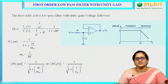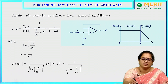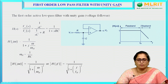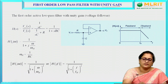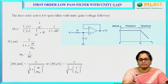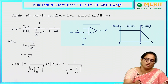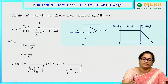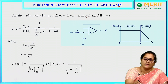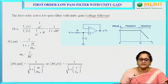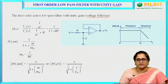First, we will see what is a first order low pass filter with unity gain and how to design a low pass filter with unity gain. This is an operational amplifier where the input voltage is connected to the positive terminal, that is the non-inverting terminal, with a combination of RC network. Feedback is given from V0 to the inverting terminal. A first order active low pass filter with unity gain is also called as a voltage follower. We need to find out the transfer function for this circuit to determine the frequency response.